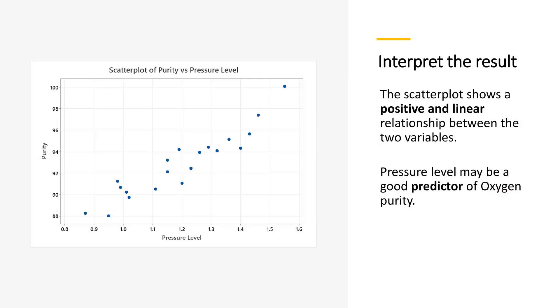The scatterplot result indicates a positive linear relationship between pressure level and oxygen purity, suggesting one could be a good predictor of the other.